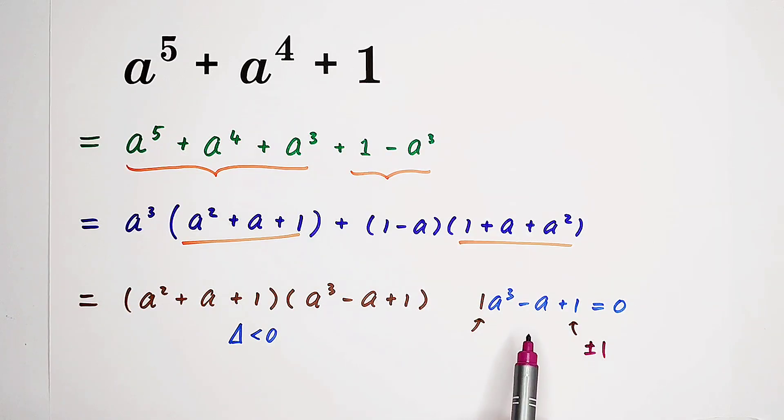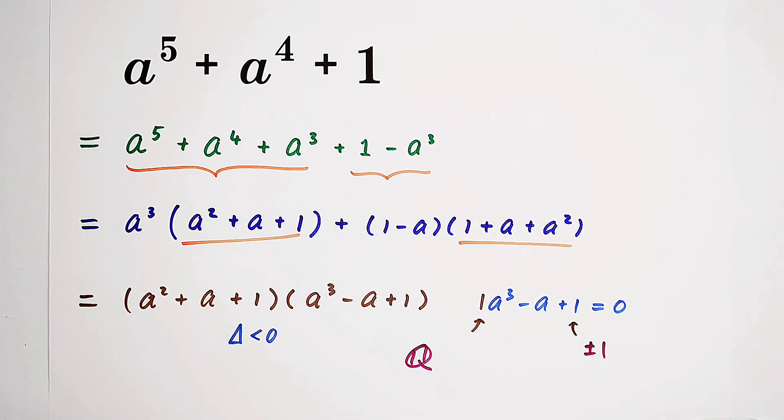Negative 1 cubed minus negative 1 plus 1 is also not 0. So that means this one does not have any rational roots. However, here we will factorize the terms into product of polynomials with rational coefficient. So that implies we factorize the terms in the field of rational numbers. So, we've finished.